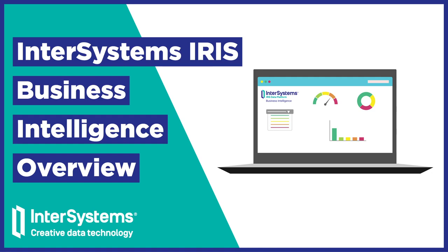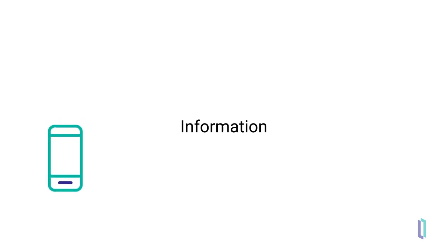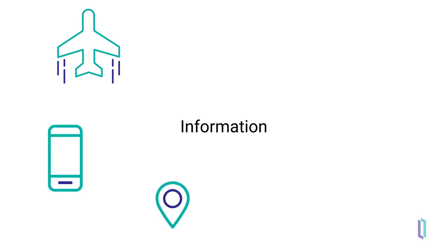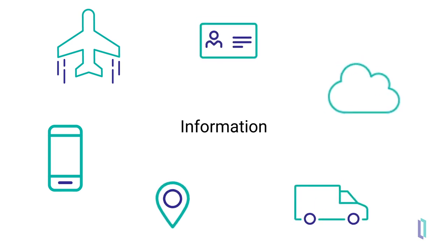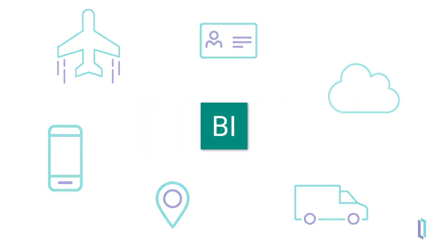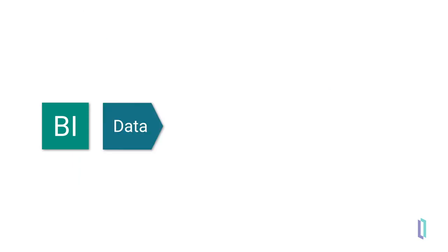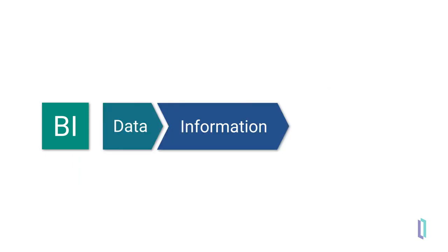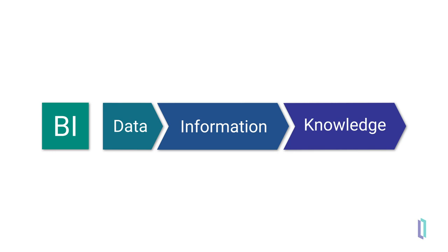Advancements in technology have made it easier to quickly obtain and share information in both personal and professional contexts. A business can readily obtain large amounts of data, but the real challenge is managing and sorting that data to bring the most relevant information to the surface. This is where Business Intelligence, or BI, can help. The primary function of Business Intelligence is to transform data into information and information into knowledge to optimize decision-making processes.